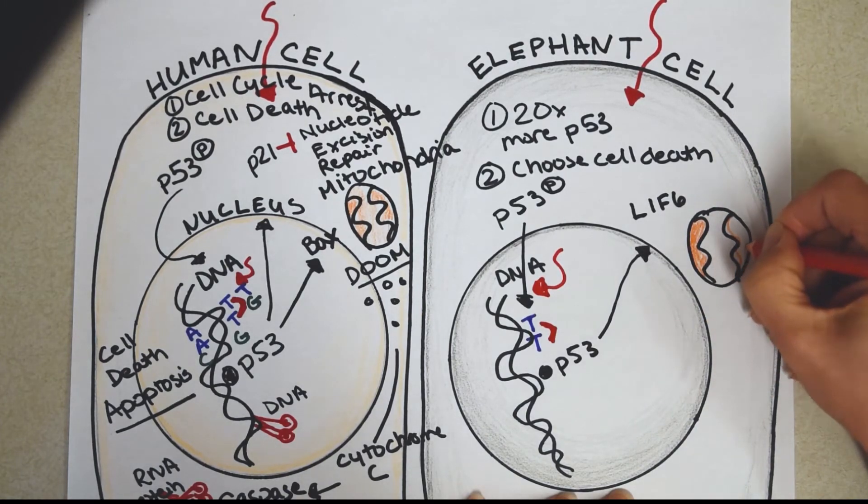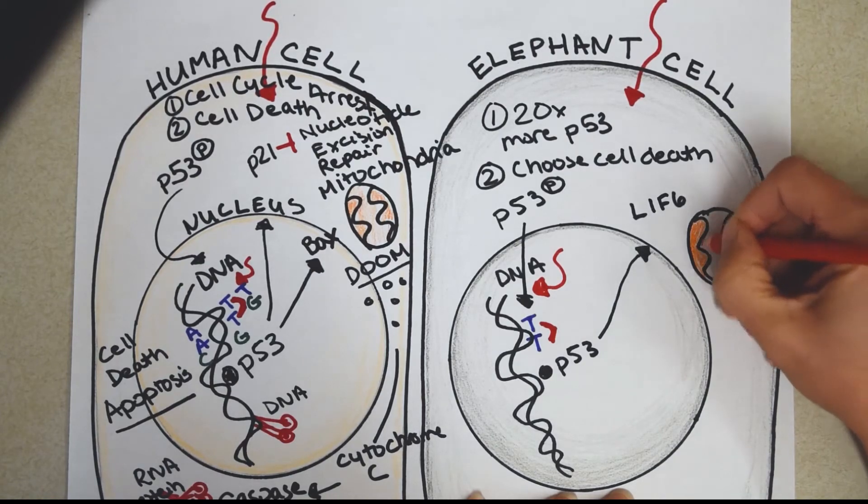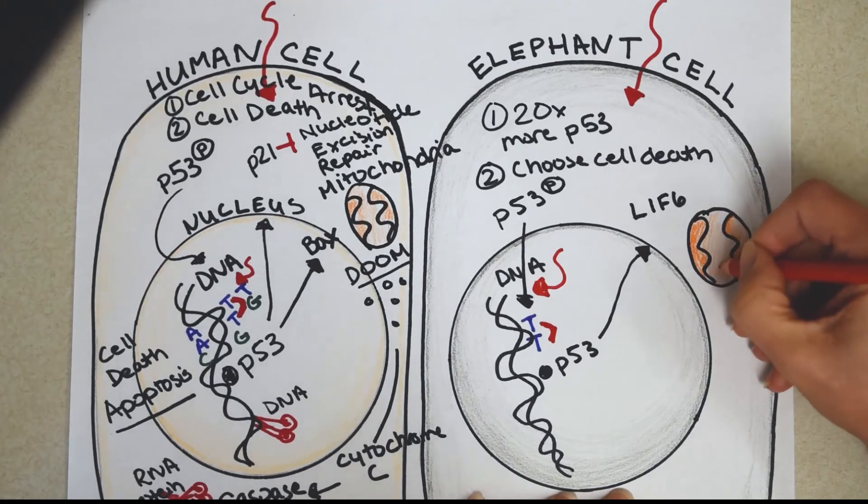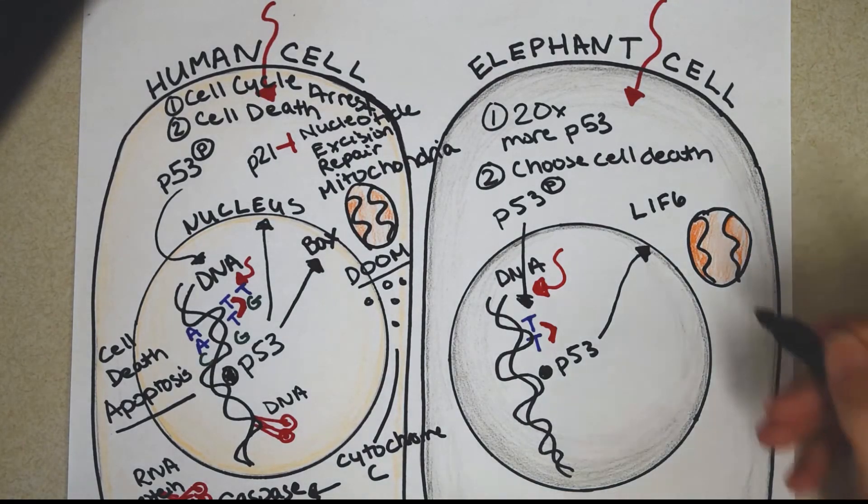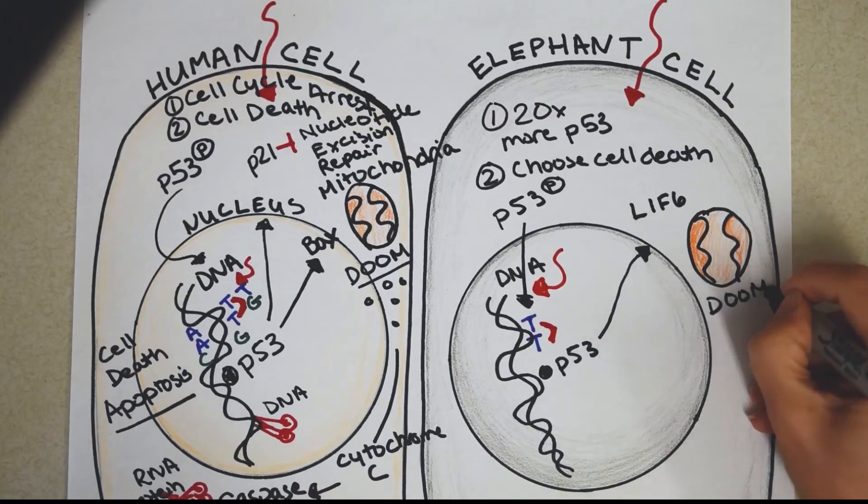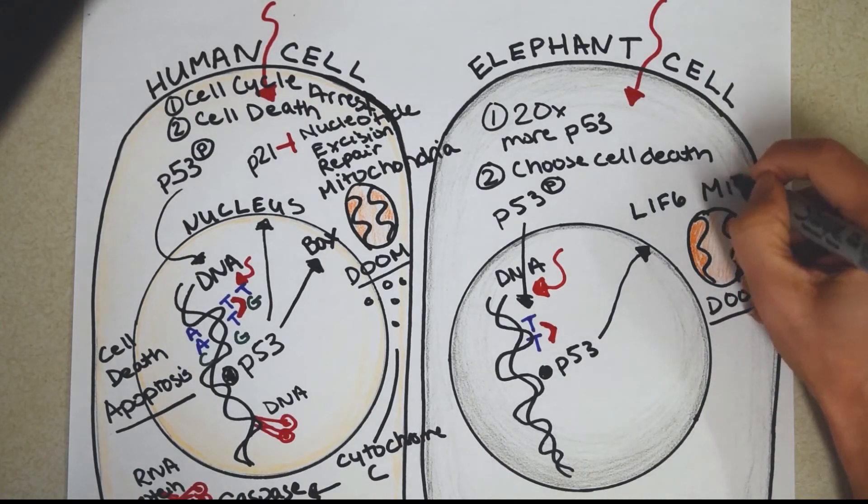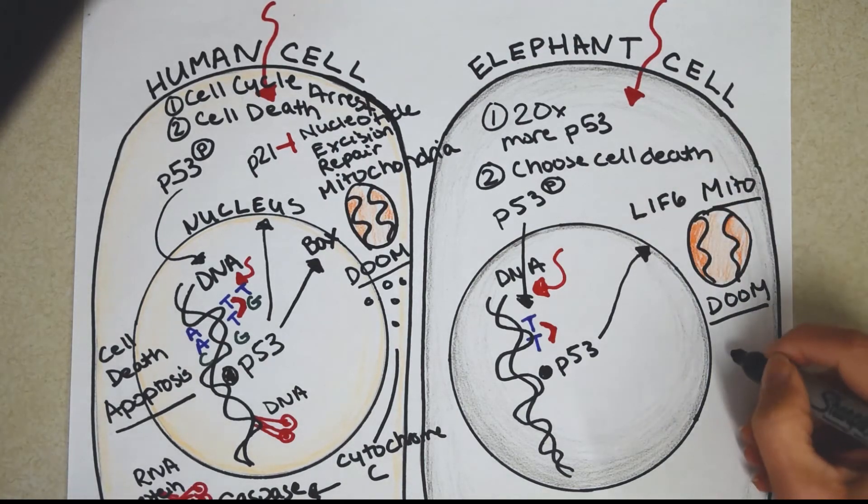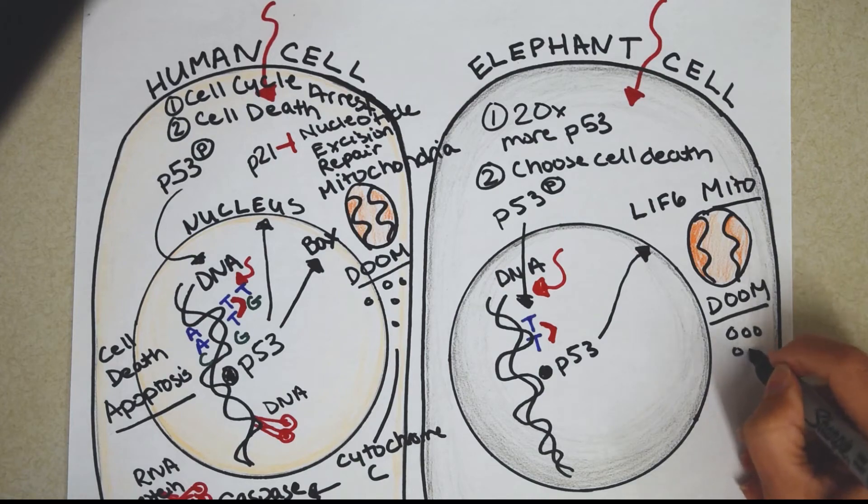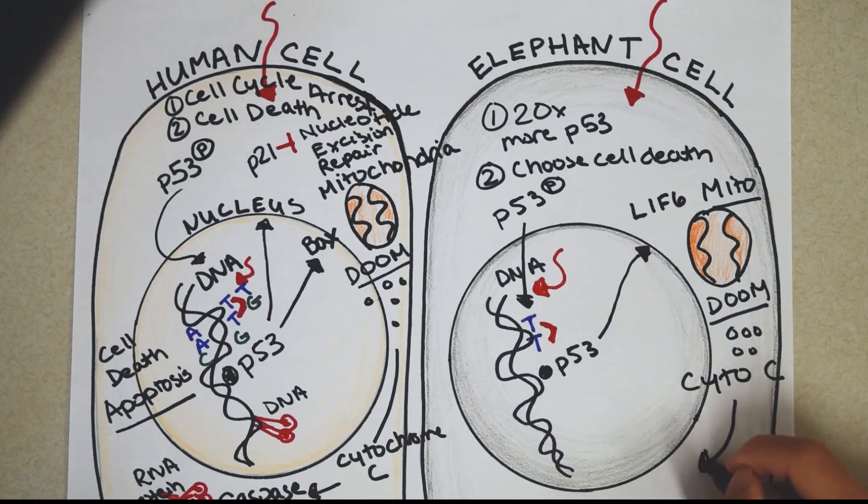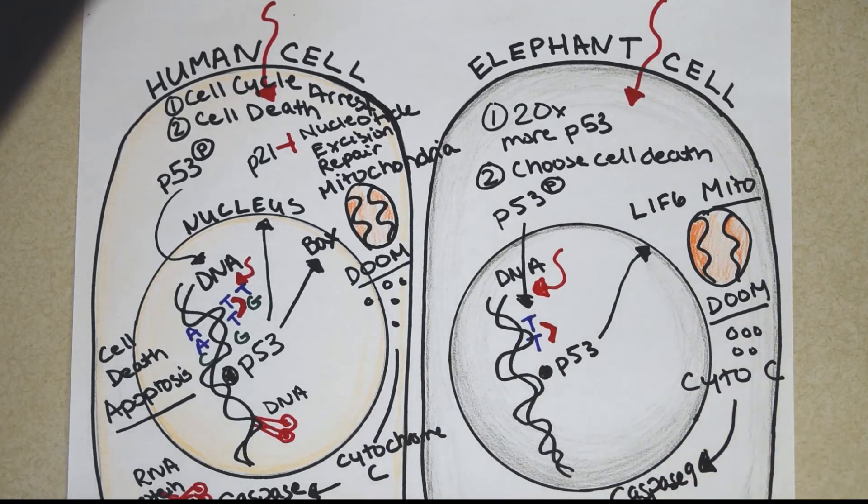And then the next steps hopefully are going to start to sound familiar. Let me just finish drawing this orange. Alright, so cytochrome C is released. Again, the doom of the cell comes from the mitochondria. And here, cytochrome C is released. And that's going to activate caspase 9. The scissors of the cell. Which will run around, again, cutting your cell to shreds. A.k.a. death by a thousand cuts.